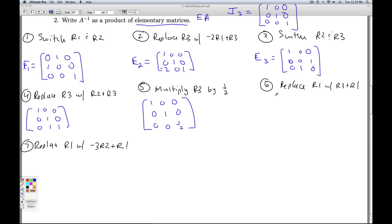Replace row one with row three plus row one. This was E4, this one's E5, this is E6. And then finally E7, replace row one with negative three row two plus row one.